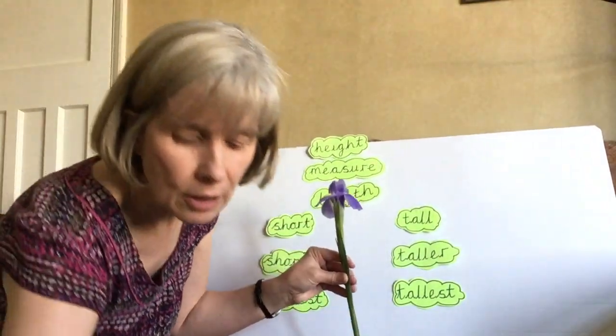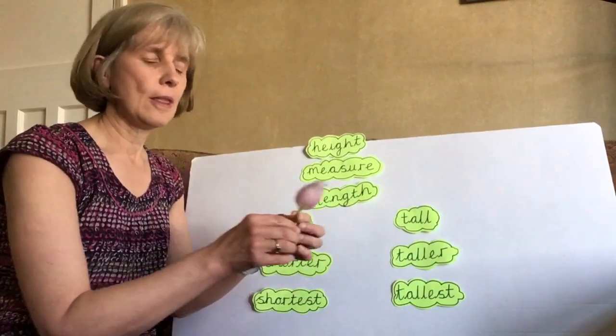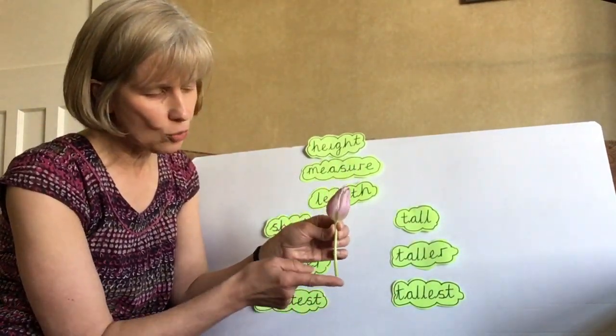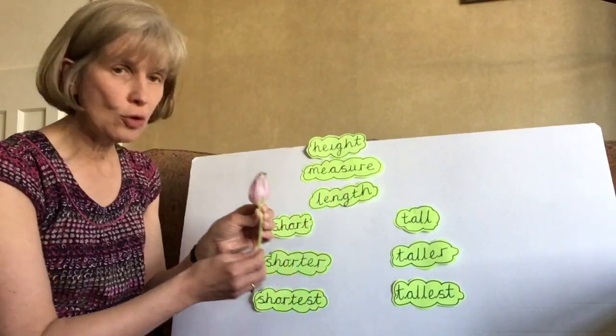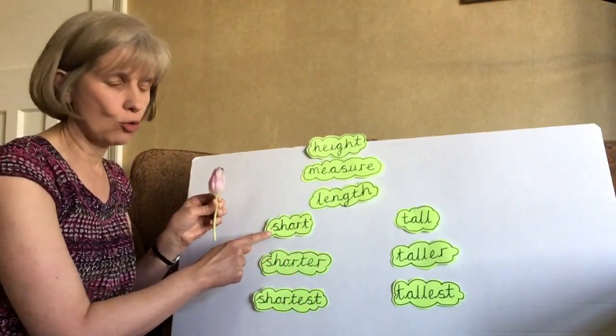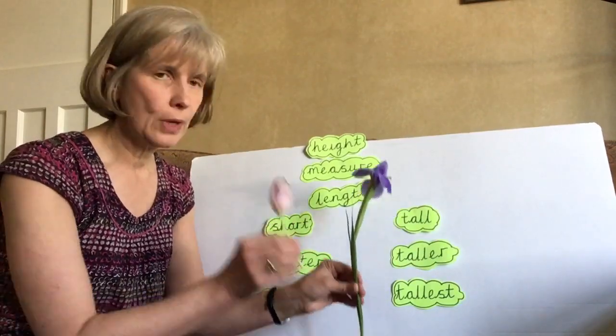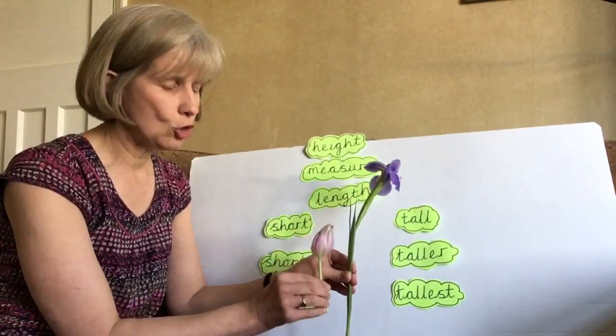Now, I've got another flower to show you. This is a tulip. And I've cut the stalk off really short. So the tulip is quite short. So we have the iris that's tall and the tulip that's short.